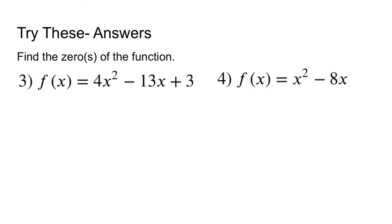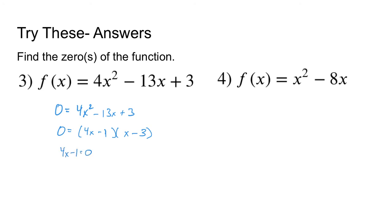Numbers 3 and 4 aren't any different from the previous problems. For number 3, we say 0 equals 4x squared minus 13x plus 3, then factor and solve. This factors to 4x minus 1 times x minus 3. Set each factor equal to 0 to get x equals 3 and x equals 1 fourth. These are not only the solutions to that quadratic equation — they are also the zeros of the function. You may see your textbook refer to that.